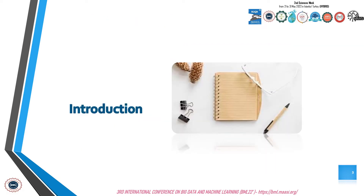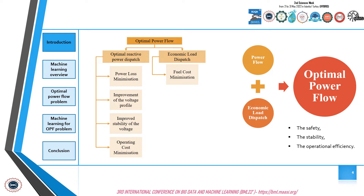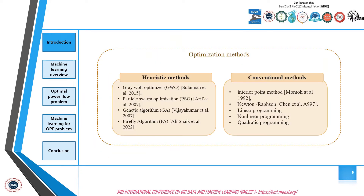In terms of introduction, we start by responding to the question: what is the optimal power flow problem? The optimal power flow problem is one of the problems frequently encountered in electrical installations. It makes it possible to determine the best operating point of an electrical network in order to optimize reactive power dispatch and economic load dispatch. The optimal power flow is considered a fundamental tool that improves the safety, stability, and operational efficiency of an electrical grid. In the literature, several optimization methods are used to solve this problem, with heuristic methods and conventional methods, as shown in this figure.